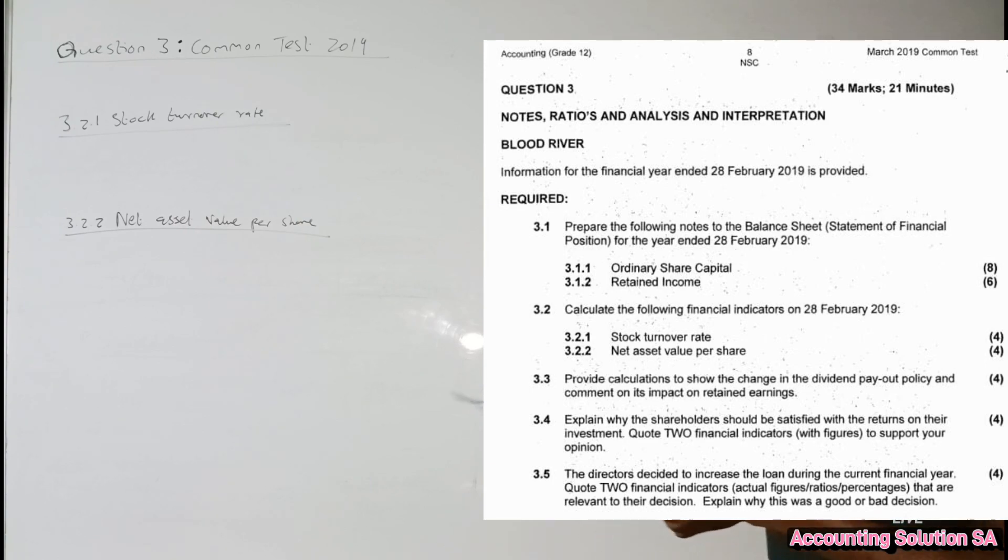3.2.1 Stock turnover rate, 3.2.2 Net assets value per share. Number 3.2.1 stock turnover rate, we need to know the formula first before we even start with our calculation.